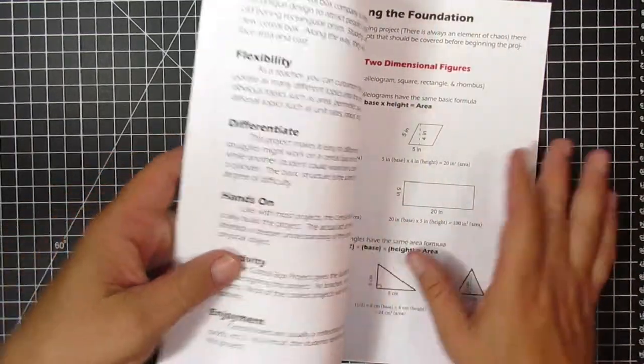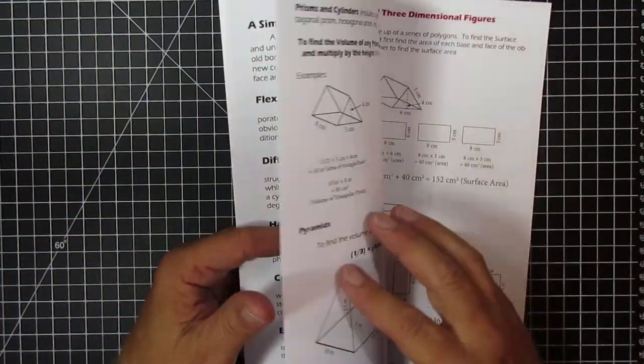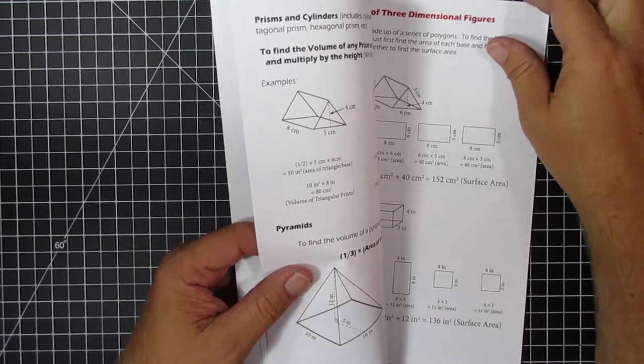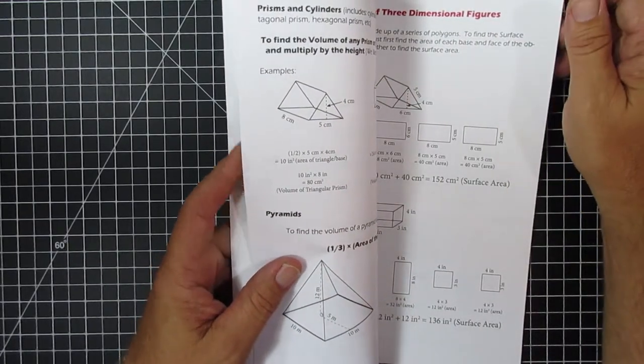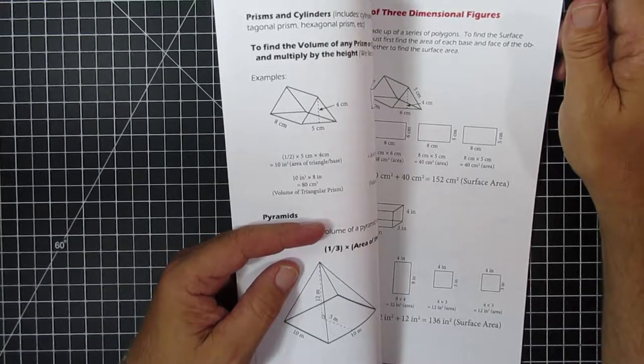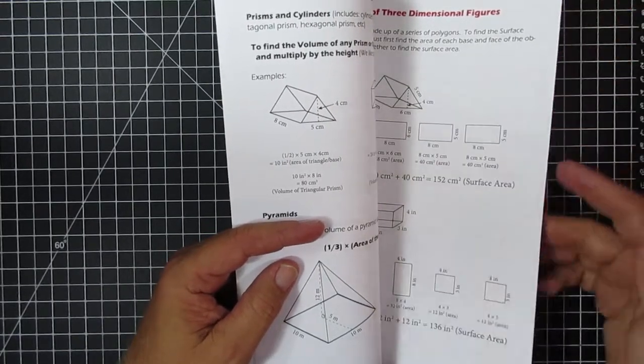Now, as far as the actual guide goes, the first part we have a foundation, basically how you find area, volume, surface area, find nets, all the basic fundamentals of two-dimensional and three-dimensional objects that we're going to need here.